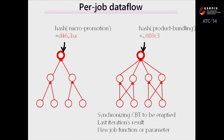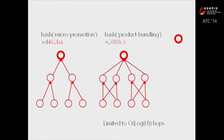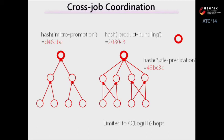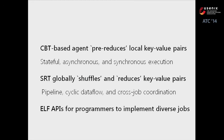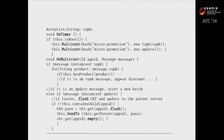A second new feature is that we support coordination between different jobs. You only need to know the job's name; the routing protocol will route your request to the job's master and return results, with latency limited to log n hops. ELF's API allows programmers to implement diverse jobs, and here is a simple example of implementing the micro-promotion application.